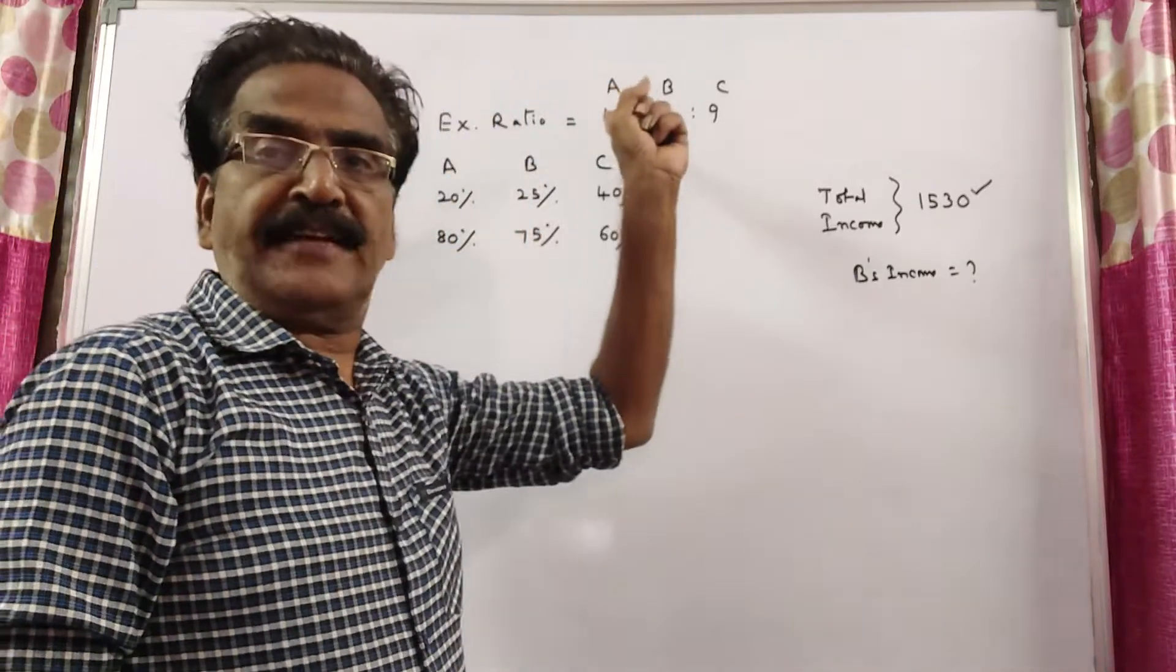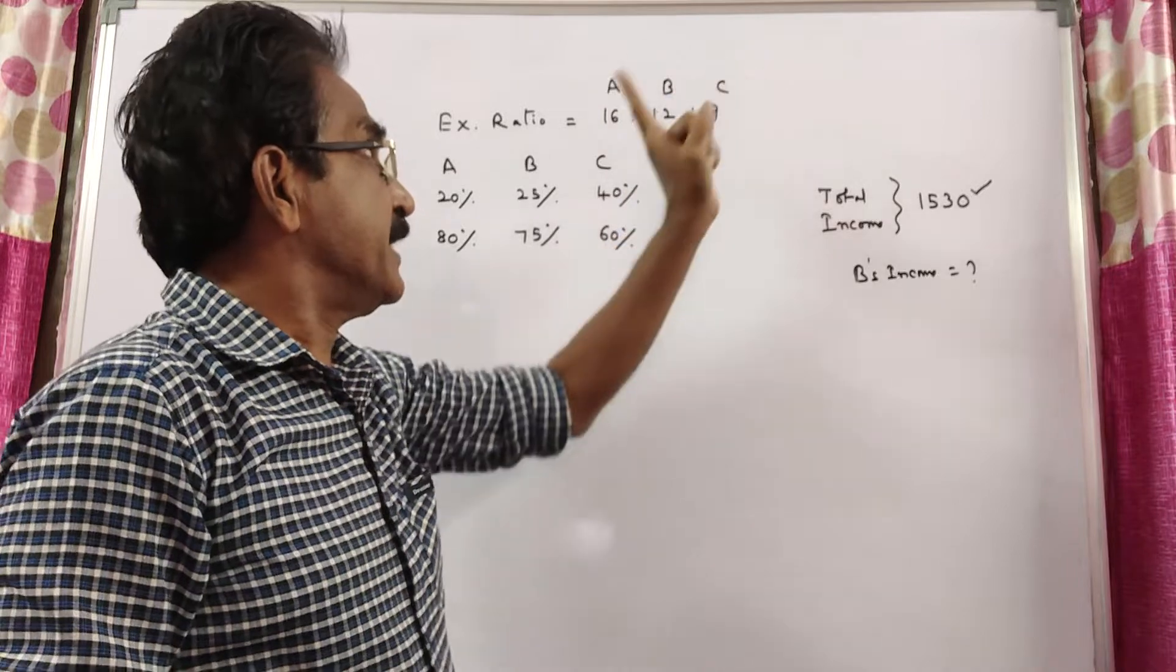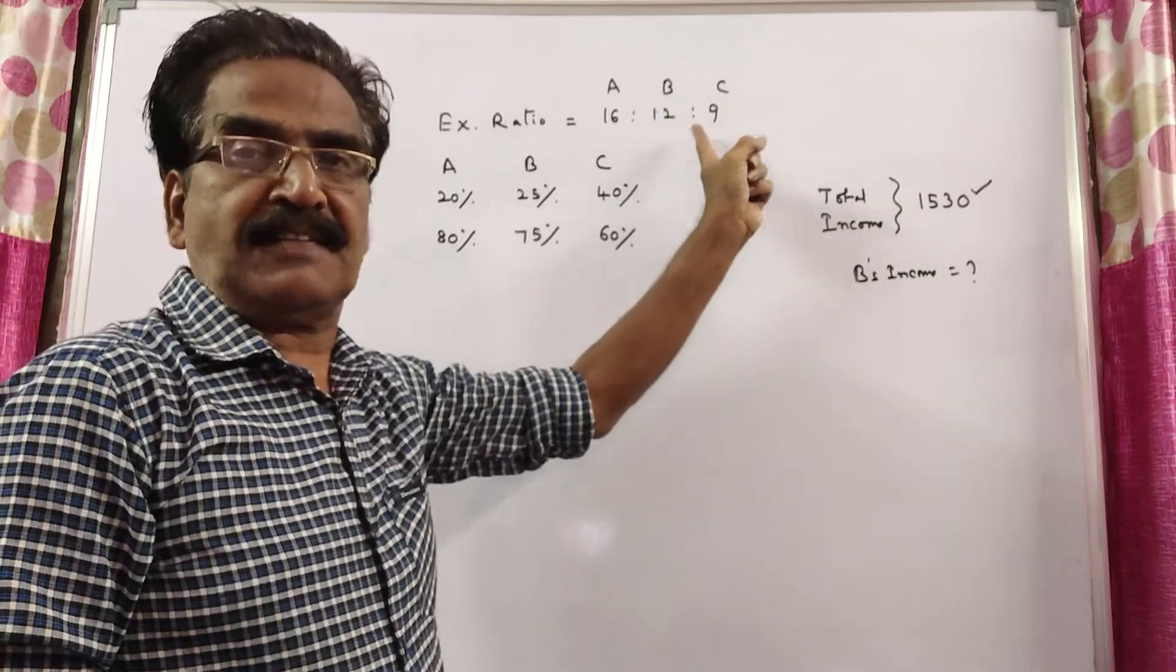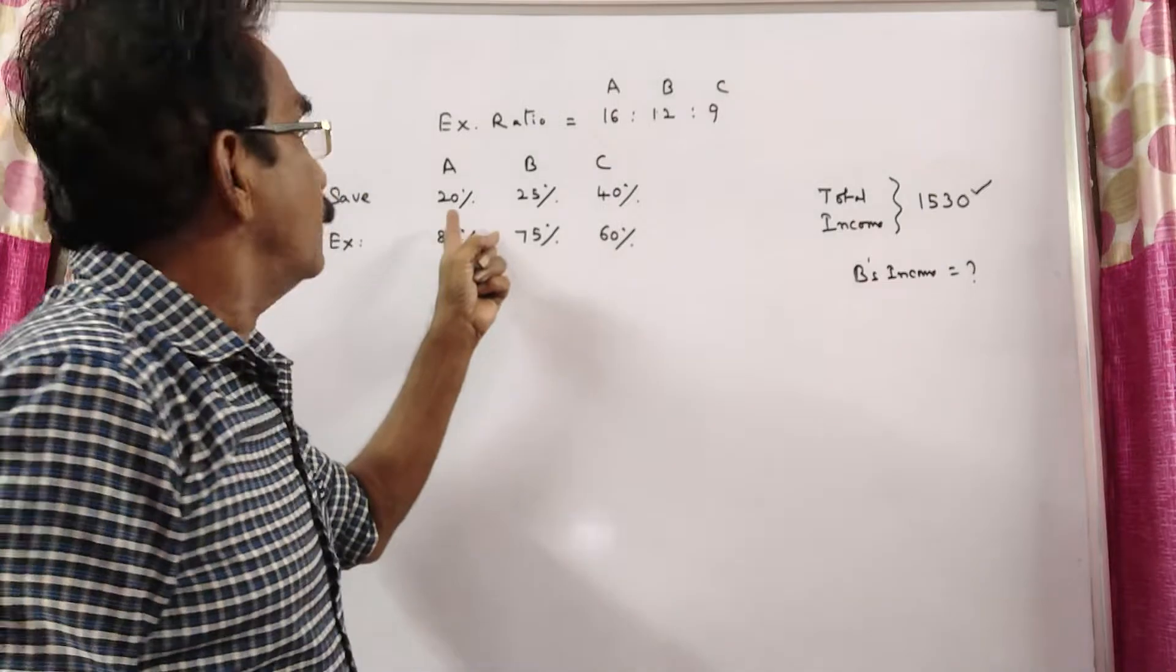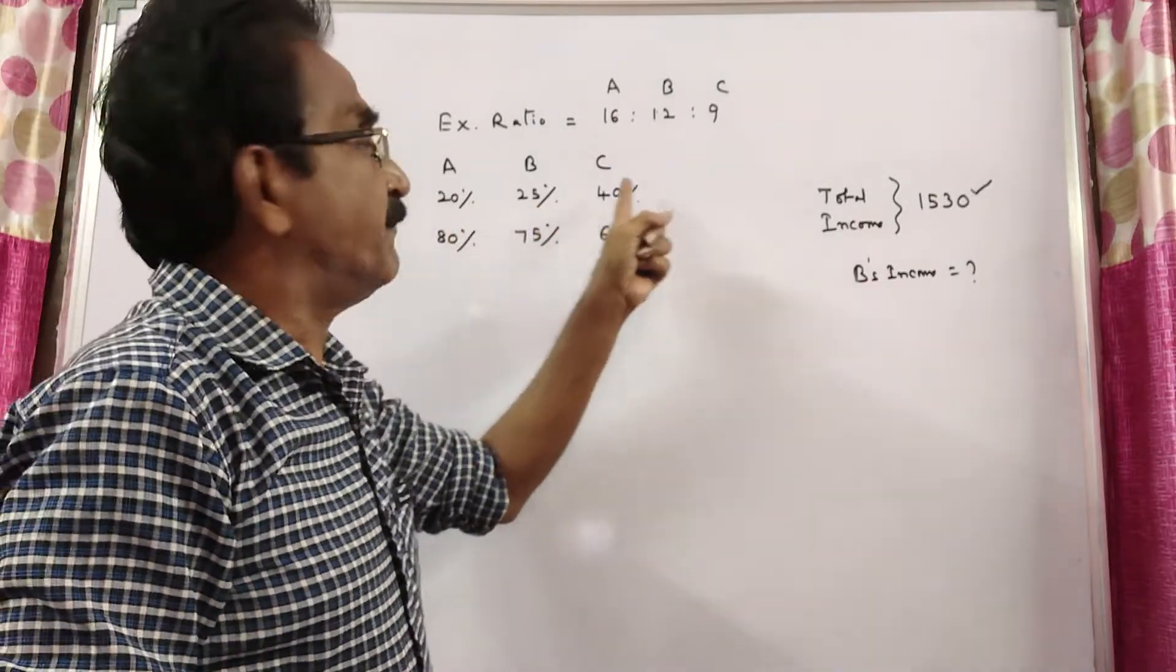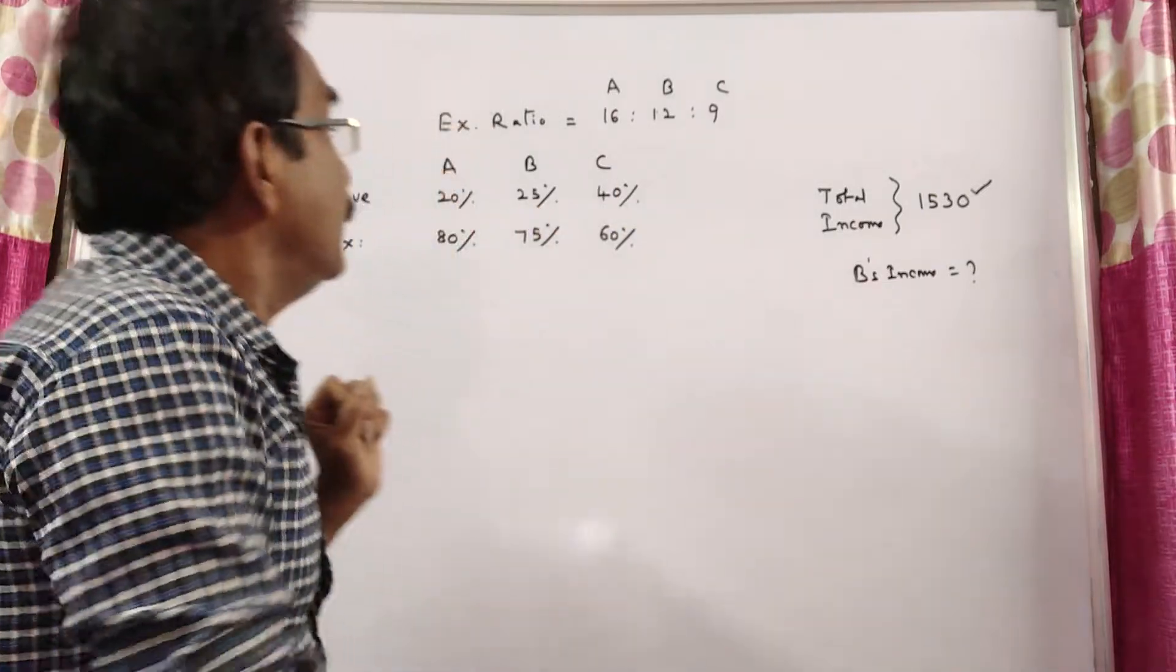The ratio of expenditure of A, B, C is 16:12:9, and they save 20%, 25%, and 40% respectively.